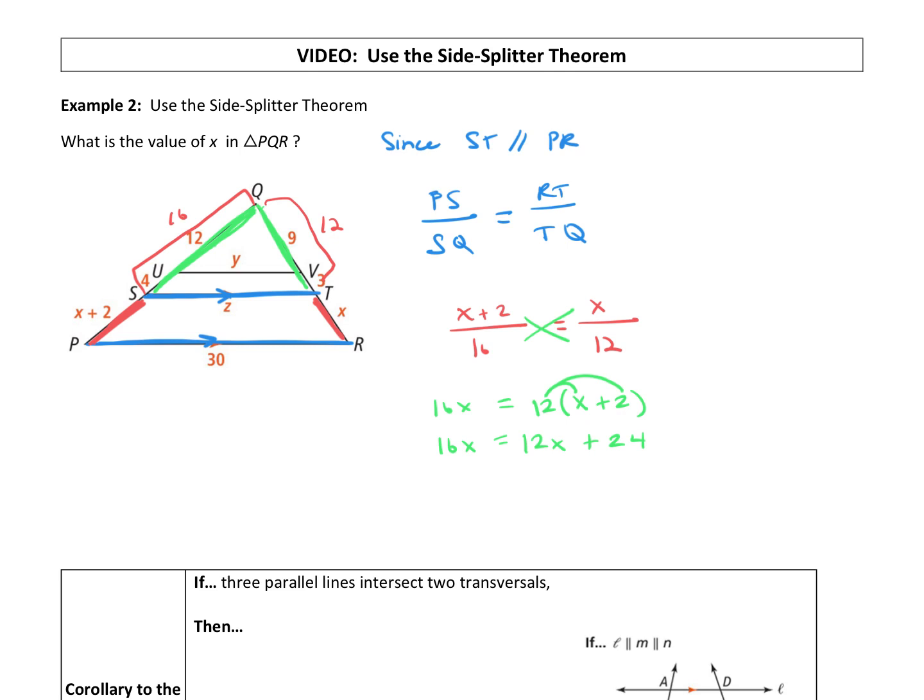All right, so solving for x, let's get our x's to the same side. I'm going to subtract 12x from both sides. So 4x equals 24. If you divide both sides by 4, we get x equal to 6. And what did they ask us to find? What is the value of x? Well, we just found the value of x is 6.